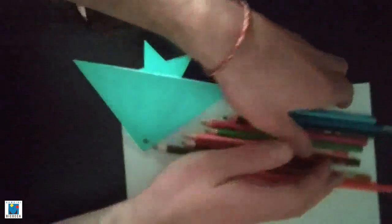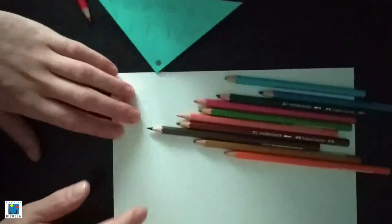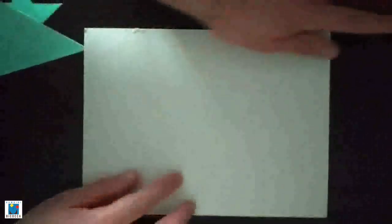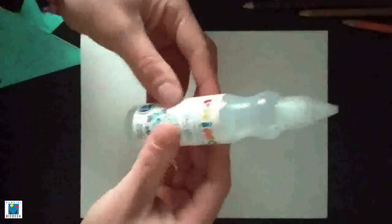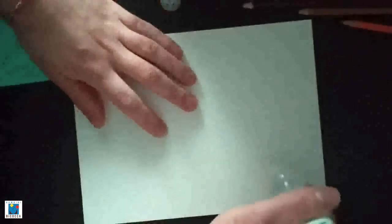Now that our fish is ready, we can glue it on the white paper. So this is our paper. We're gonna take the glue. You can use any type of glue. And you can glue it wherever you want. I'm gonna put it here.